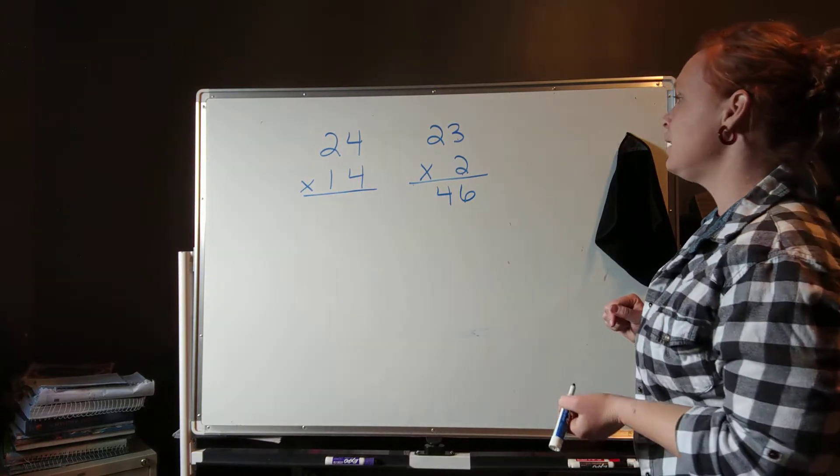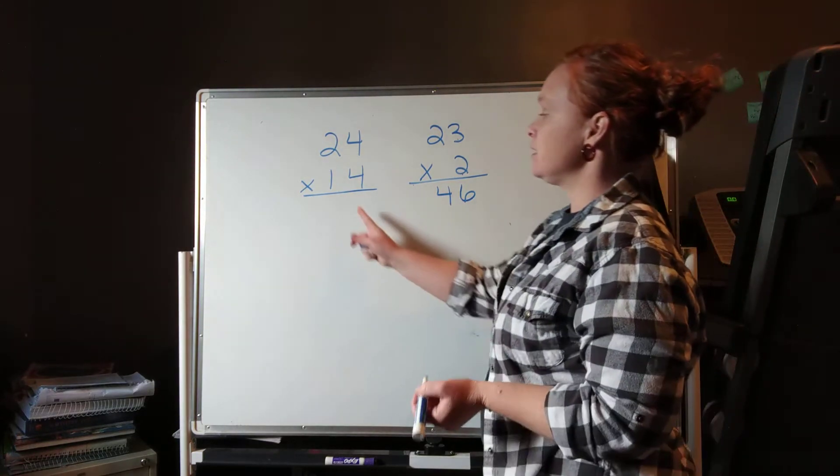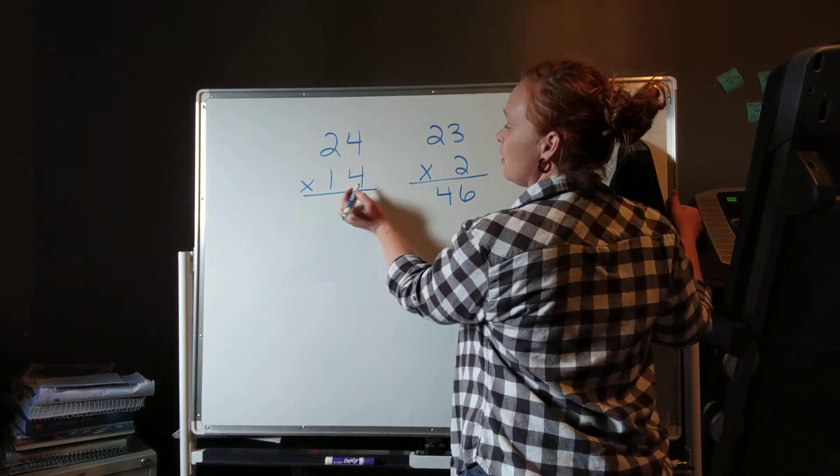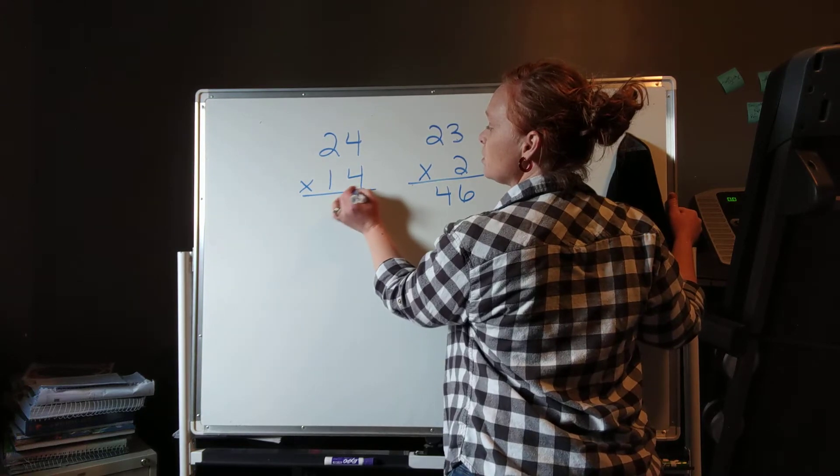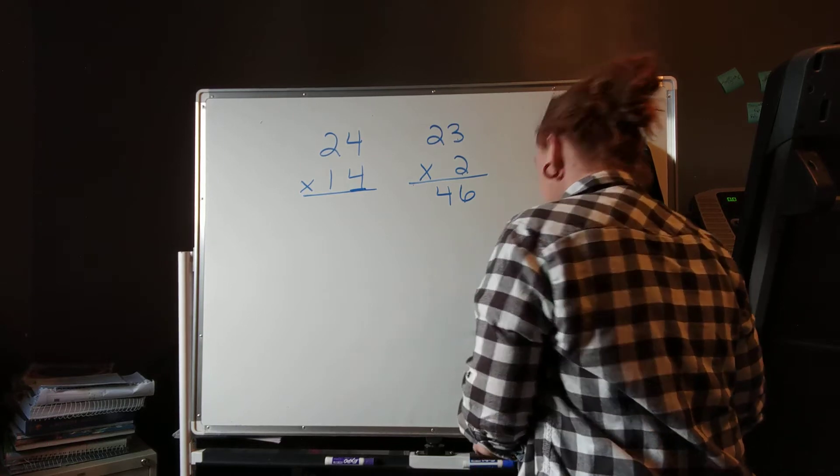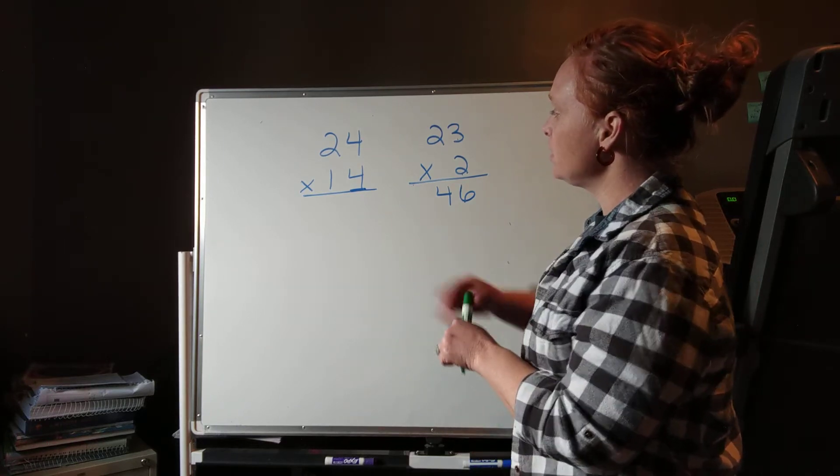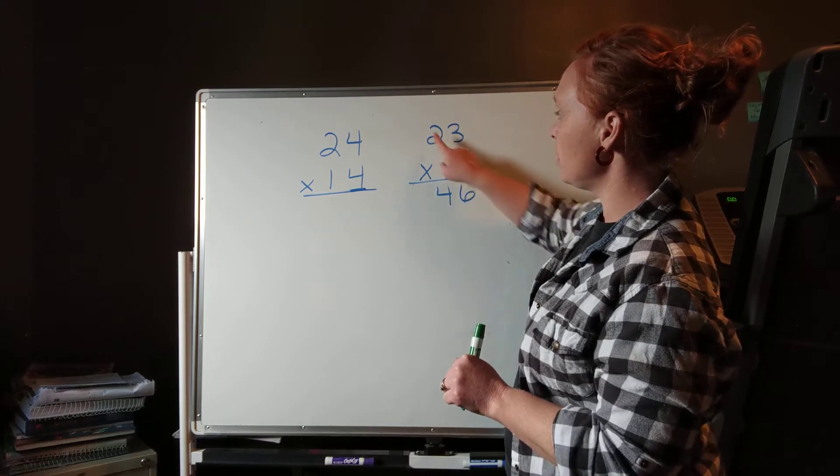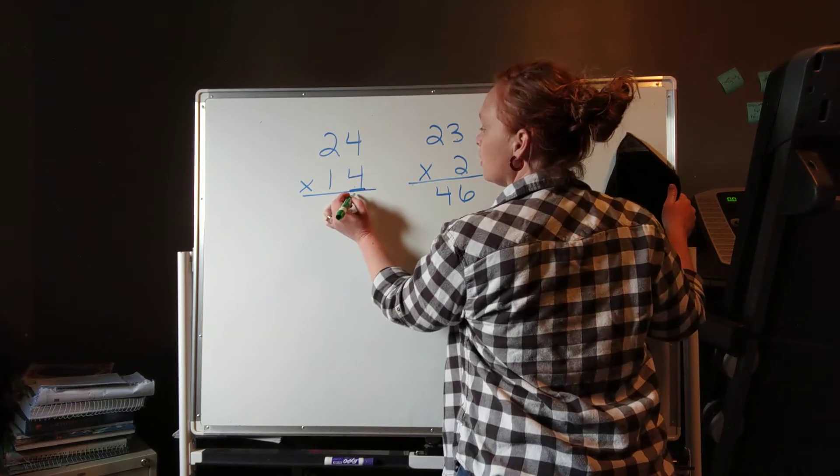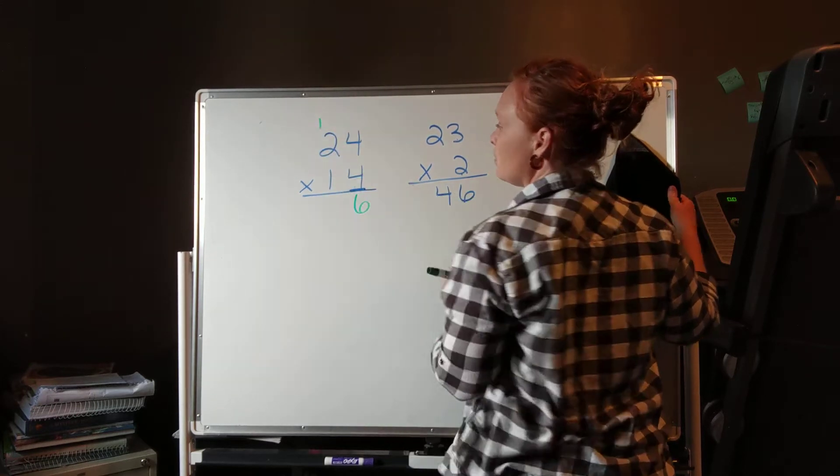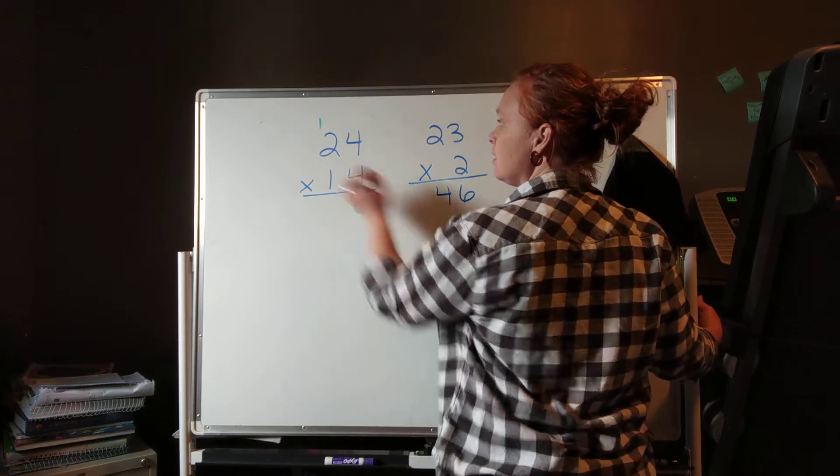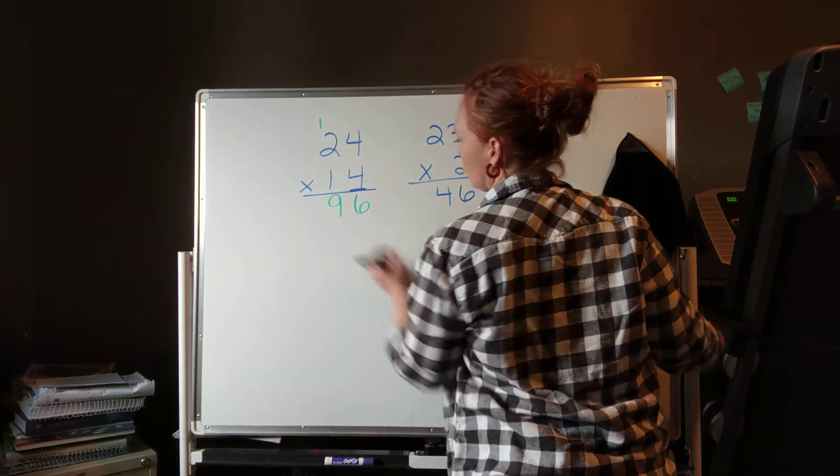Okay, now let's go to two digit multiplied by two digit. So remember that we want to start out with our ones place, and we want to go ahead and multiply this ones place just like we did this ones place, to the ones place and to the tens place. So let's do that. 4 times 4, 16, carry the 1, 4 times 2 is 8, plus 1 is 9.